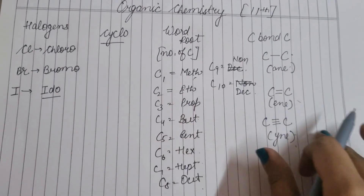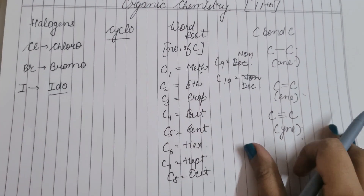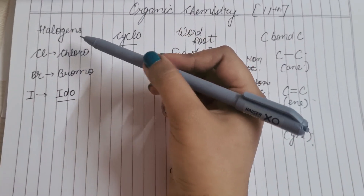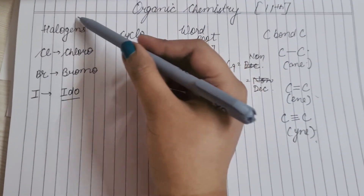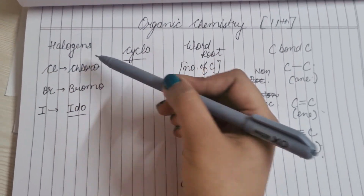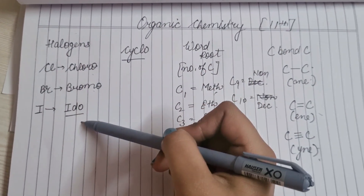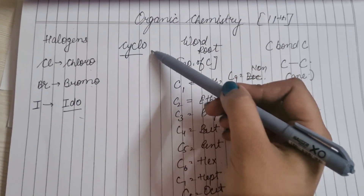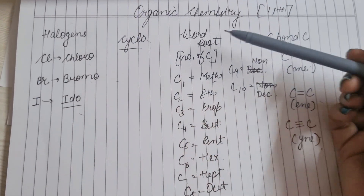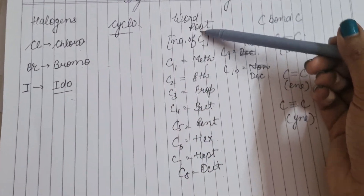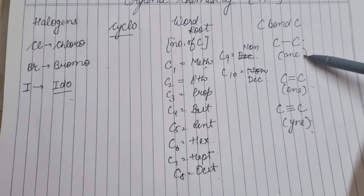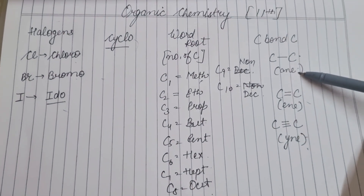तो इस चीज को मैं दुबारा repeat कर देती हूँ। Cyclo check करो, halogen check करो — chloro, bromo, iodo — फिर number of carbon देखो, then bond कौन सा है वो देखो।